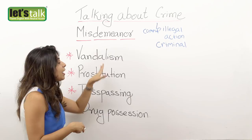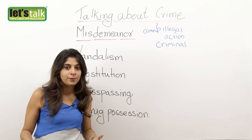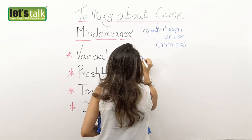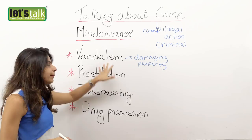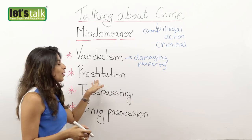The first one is vandalism. Vandalism is when a person or a group of people try to damage or destroy a property. It is definitely a crime and it is called vandalism.